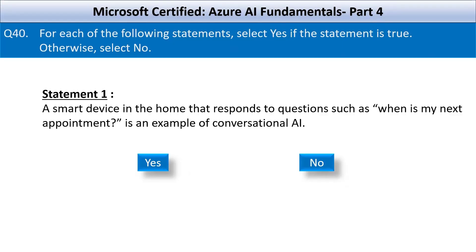The first statement is: a smart device in the home that responds to questions such as 'when is my next appointment?' is an example of conversational AI. Folks, this is a classic example of conversational AI. Conversational AI refers to technologies like chatbots, voice assistants, and smart speakers that enable machines to understand, process, and respond to human language. These systems typically use natural language processing and machine learning to interpret user inputs and provide relevant human-like responses.